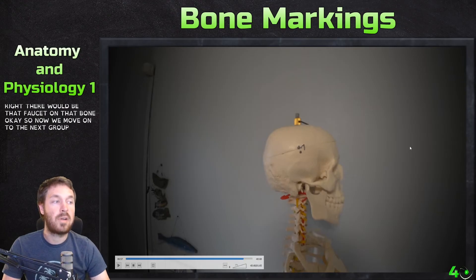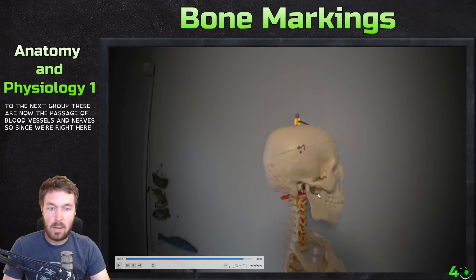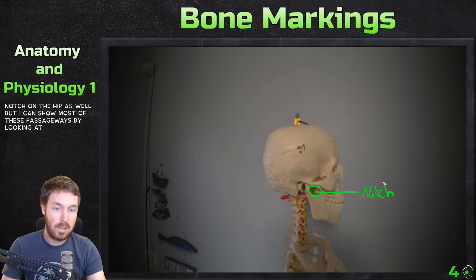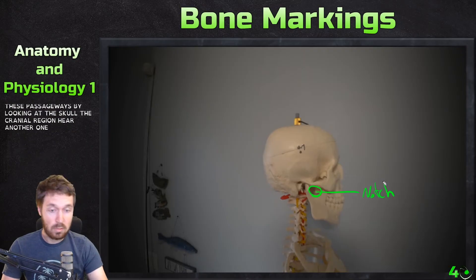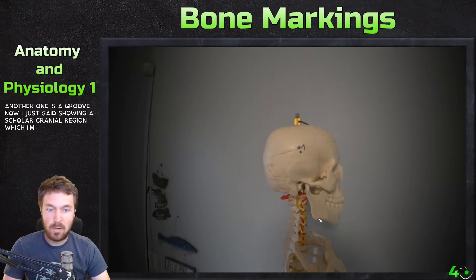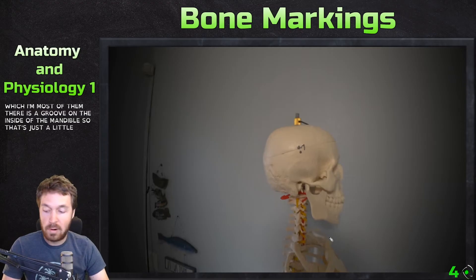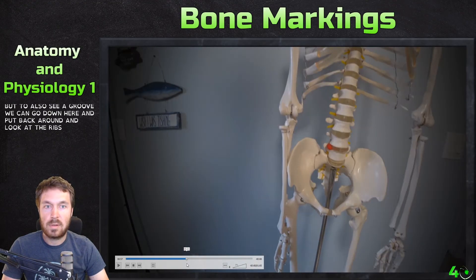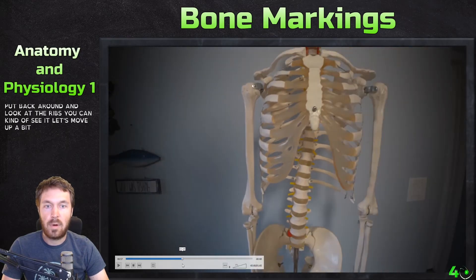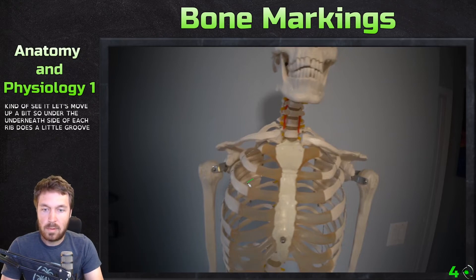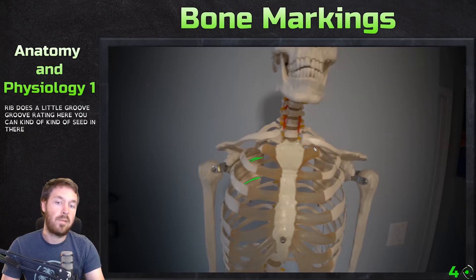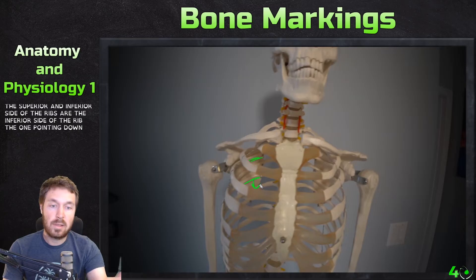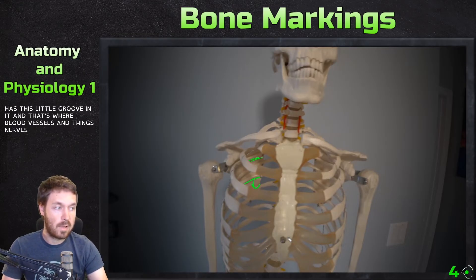Now we move on to the next group: passageways for blood vessels and nerves. A notch is one example — there's a sciatic notch on the hip. Another is a groove, which is just a little furrow in the bone. There's a groove on the inside of the mandible, and also on the underneath side of each rib there's a little groove. That's how you can tell the superior from inferior side of the rib — the inferior side has this groove where blood vessels and nerves travel.